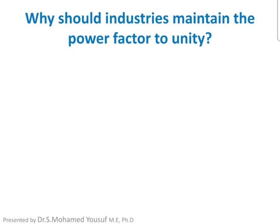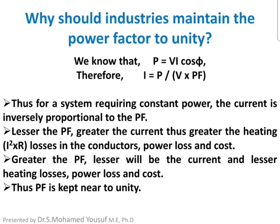Why should industries maintain the power factor near to unity? The power equation can be rewritten as I = P / (V × power factor). Since power factor and current are inversely proportional, if the power factor decreases due to the inductive nature of the load, the current increases. If current increases, I²R conductor losses increase. Therefore industries should keep the power factor near to unity.